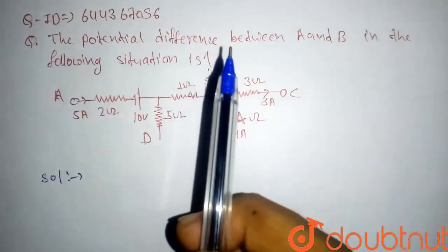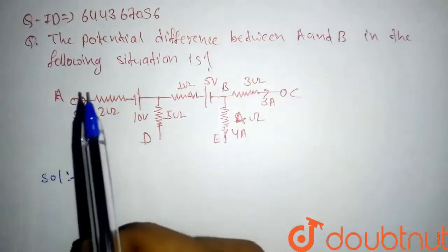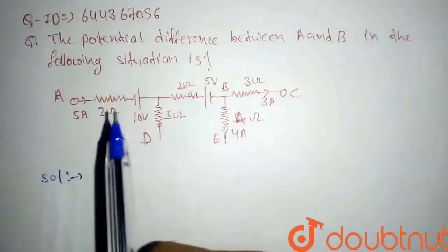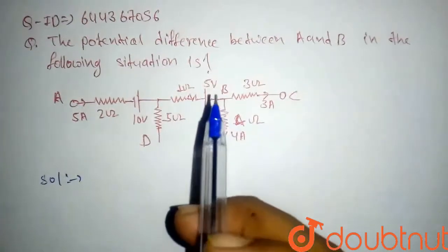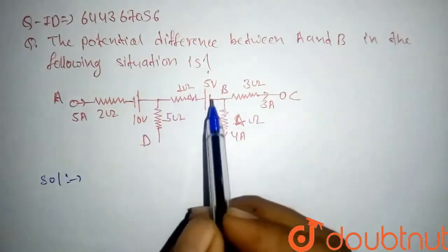Hello everyone, today we have a question: the potential difference between A and B in the following situation. So we have this circuit, we have to find the potential difference from A to B. So first we will find current in this branch.